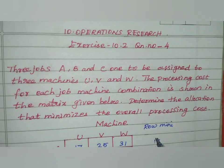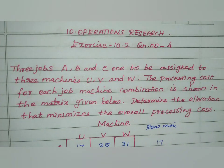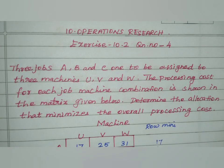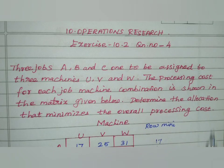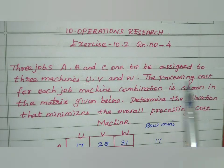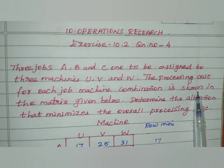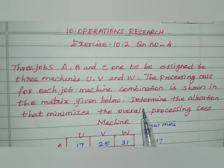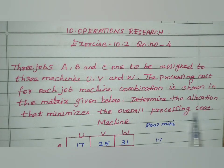Hi, welcome. Today is the 12th Business Math, New Edition, 10th Chapter, Operation Research, Exercise 10.2, Question 4. Three jobs A, B, and C want to be assigned to three machines U, V, and W. The processing cost for each job-machine combination is shown in the matrix given below. Determine the allocation that minimizes the overall processing cost.